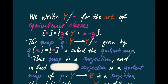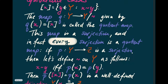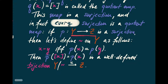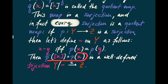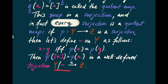Furthermore, every surjection happens to be a quotient map. If we have a surjection from Y to Z, we can define an equivalence relation on Y by saying X is similar to Y if and only if their images under P are equal. That defines an equivalence relation, and we get a map from the set of equivalence classes on Y to Z by sending the equivalence class of X to P(X). That defines a well-defined map, and in fact it's a bijection.